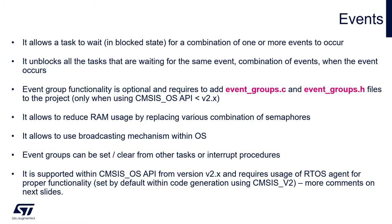Events allow a task to wait for a combination of one or more events. Once an event occurs, it may unblock all the tasks that are waiting for it, if the tasks are not waiting for more than one event. As a result, the unblocked task is moved from the blocked to the ready state.